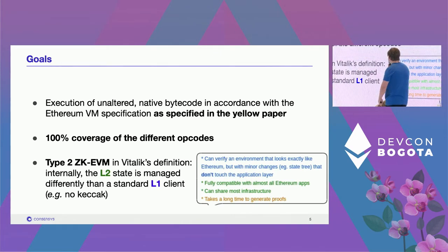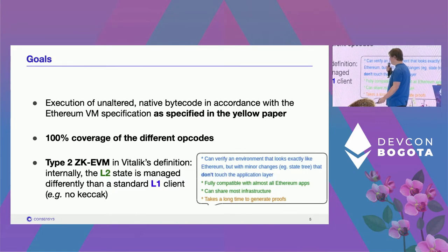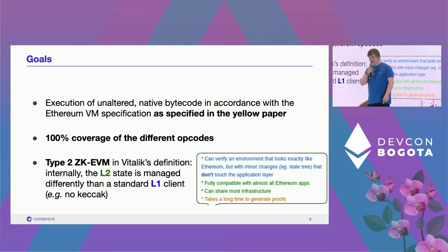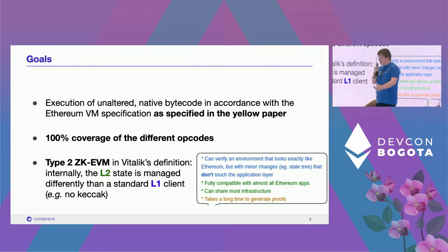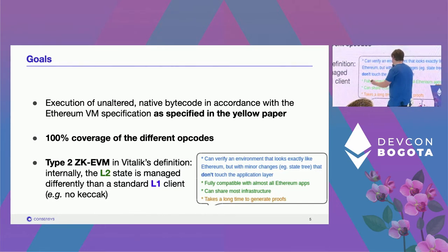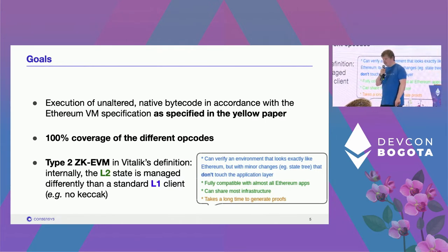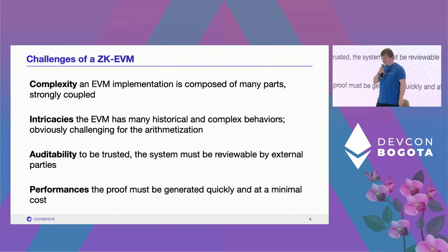When we set out on this project, we had a few goals. We wanted to prove the execution of unadulterated native bytecode and respect the logic specified in the Ethereum Yellow Paper. We wanted full coverage of all opcodes. Where we allowed ourselves to deviate is in terms of the representation of the state — for instance, we will not be using Keccak. We are building a Type 2 ZK EVM in the sense of Vitalik's classification.